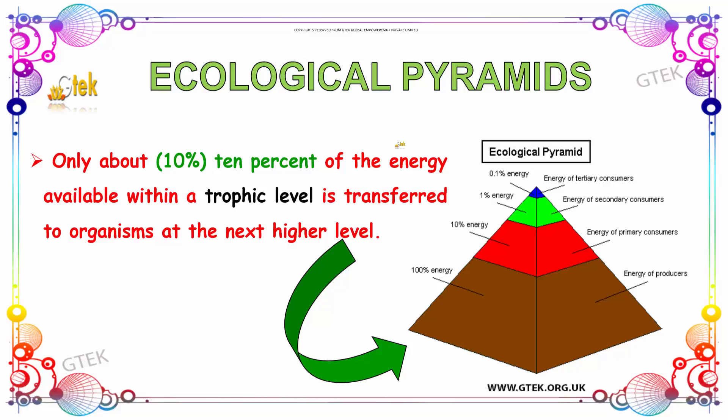Now we are going to discuss about ecological pyramids. Only about 10% of energy available within a trophic level is transferred to organisms at the next higher level. Here the energy ranges are shown in the ecological pyramid.